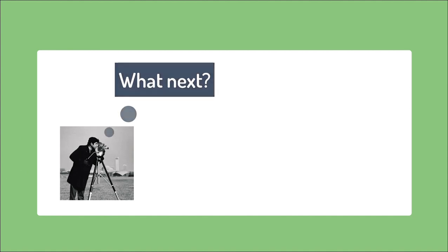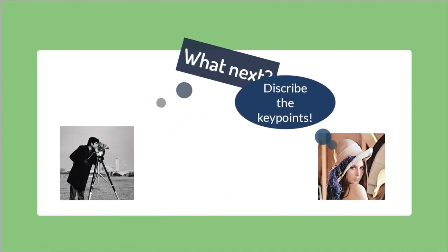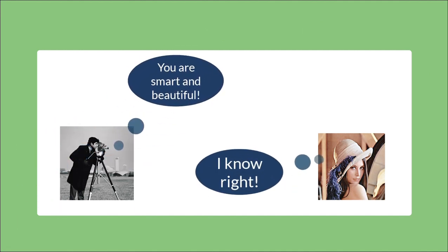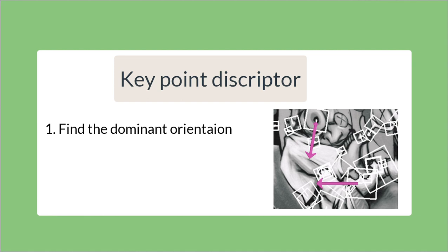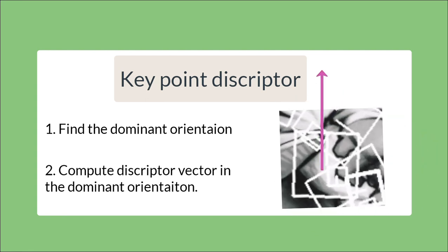After detecting the key points in the images, we need to do the matching process to match the corresponding key points. To do that, a key point descriptor is needed. Let's find out how SURF descriptor works. SURF descriptor is a two-step process. The first part is to find the dominant gradient orientation of the detected key point and the second part computes the descriptor vector of the key point region after aligning it with its dominant gradient orientation.